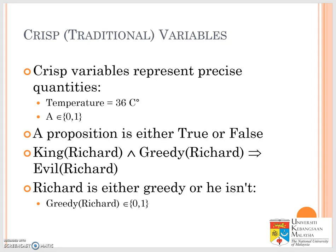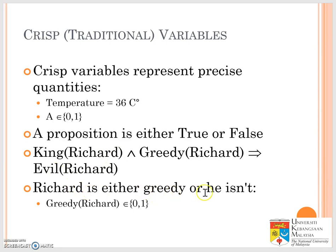For example, if the temperature is 36 degrees, we don't associate 36 with warm, a bit cold, or not too sunny. The best we can do is assign a value between 0 and 1. In propositional logic, if Richard is a king and Richard is greedy, then Richard is evil — Richard is either greedy or he is not. It's a very crisp boundary: either yes or no, nothing in between.